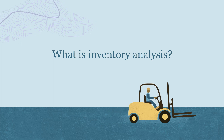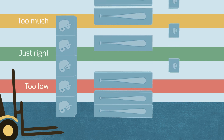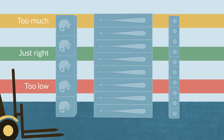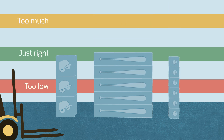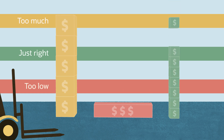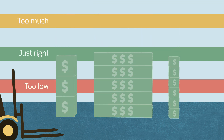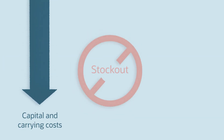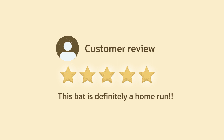What is inventory analysis and how does it work? Inventory analysis is the process of analyzing inventory performance to consistently stock the right quantity and type of items. Since inventory is a significant expense for product companies, stocking the right products is crucial for financial health. Doing so lowers capital and carrying costs while minimizing stockouts and increasing profitability and cash flow. It also means happier and more loyal customers.